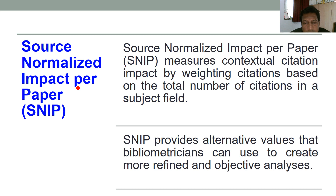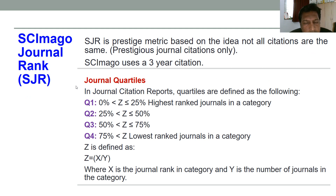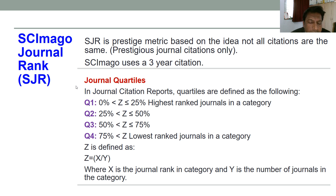SNIP provides an alternative value that bibliometricians can use to create a more refined and objective analysis. Now, after calculation of impact factor or source normalized impact factor, there is one more way to decide the quality of a journal — it is called journal rank, assigned by Scimago. Scimago Journal Rank (SJR) is a prestigious metric based on the idea that not all citations are the same — not all citations are of good quality. Considering only citations from reputed journals over the previous three years is the basis of the Scimago journal rank.